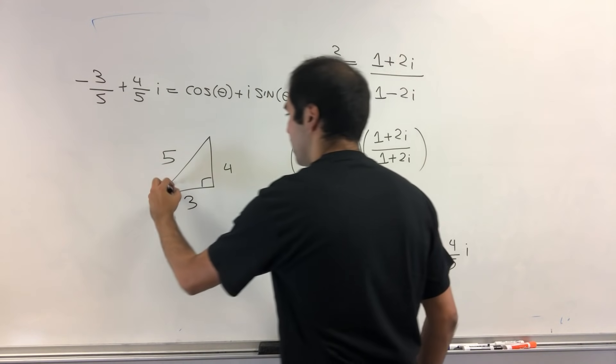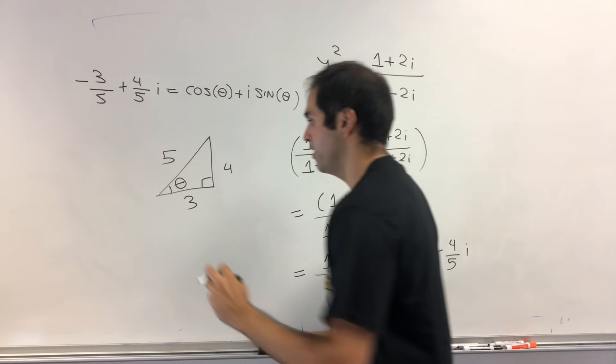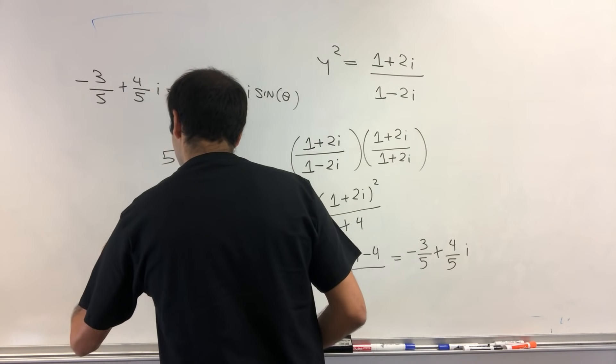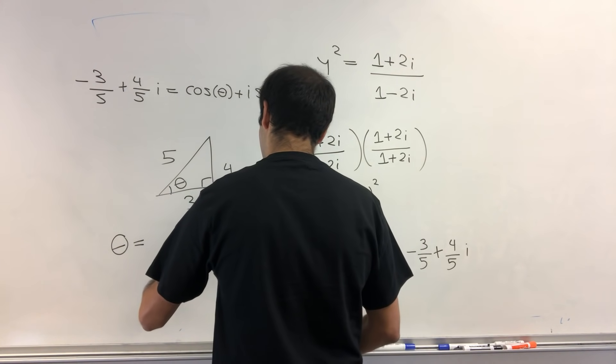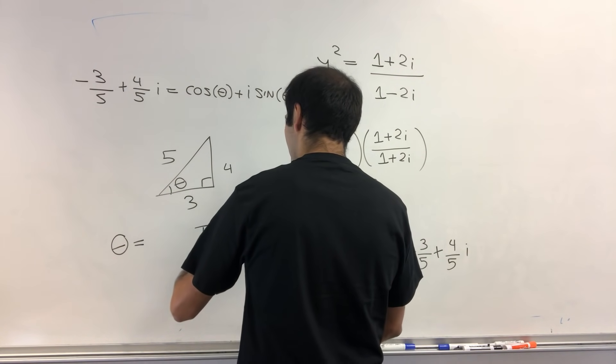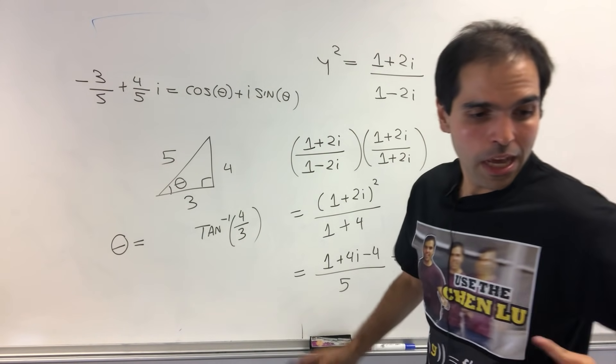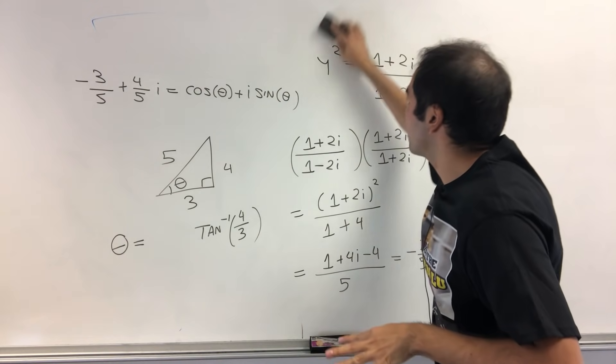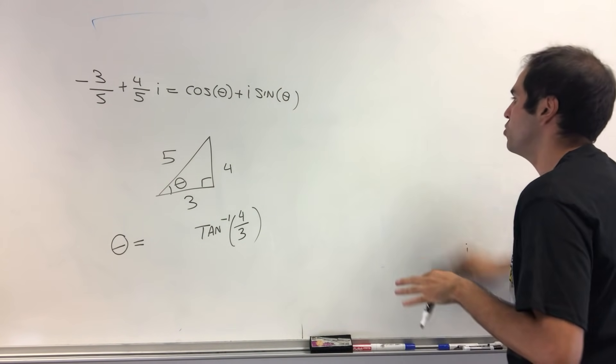So, in fact, again, if we had a plus, we could just let theta to be arctangent of 4 thirds. Because then tangent would be 4 thirds. But again, this is not quite true, because we do want the cosine to be negative.